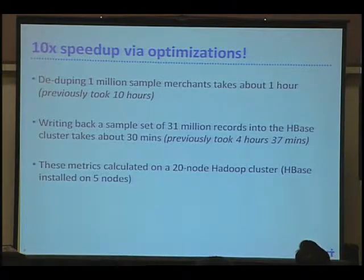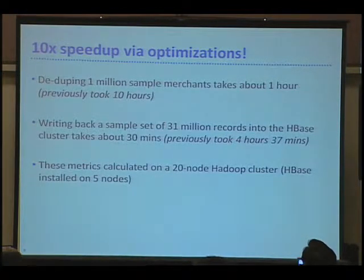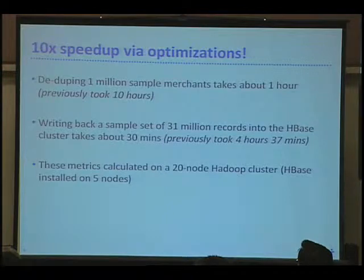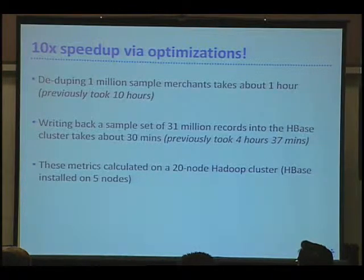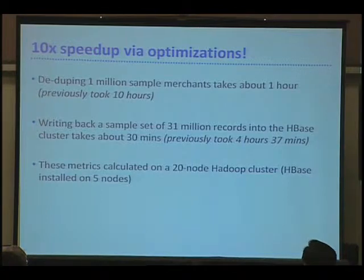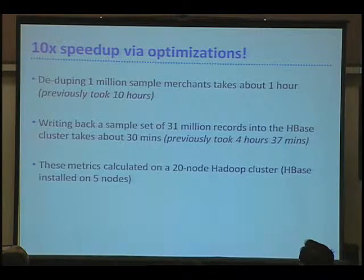The last part I want to talk through is how we used HBase to build the system and what we did to speed things up. Our initial approach was a little bit naive, and through a few weeks of optimization we got about a 10x speedup. A sample run of about a million items in our system used to take 10 hours — now it actually takes about one hour. For writing back, in a different type of computation with about 30-31 million records, it used to take about four and a half hours; now it's about 30 minutes — also about a 10x reduction. These are on a relatively small 20-node Hadoop cluster. We actually have HBase installed on only five of those nodes, so we can use all nodes for mapping and reducing, but any HBase queries or writes end up using the five nodes that have HBase installed.